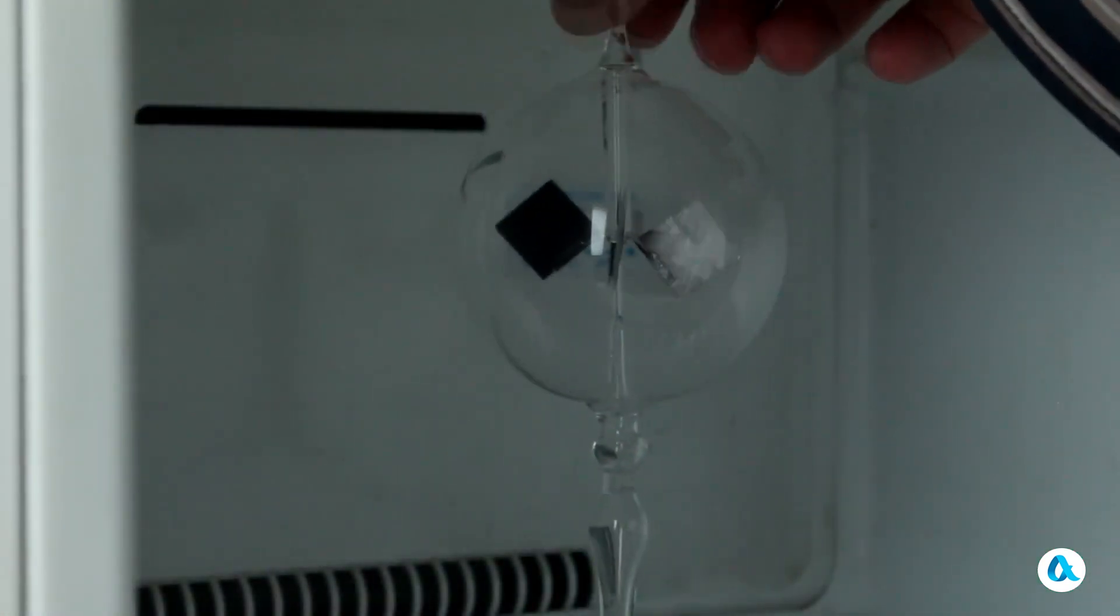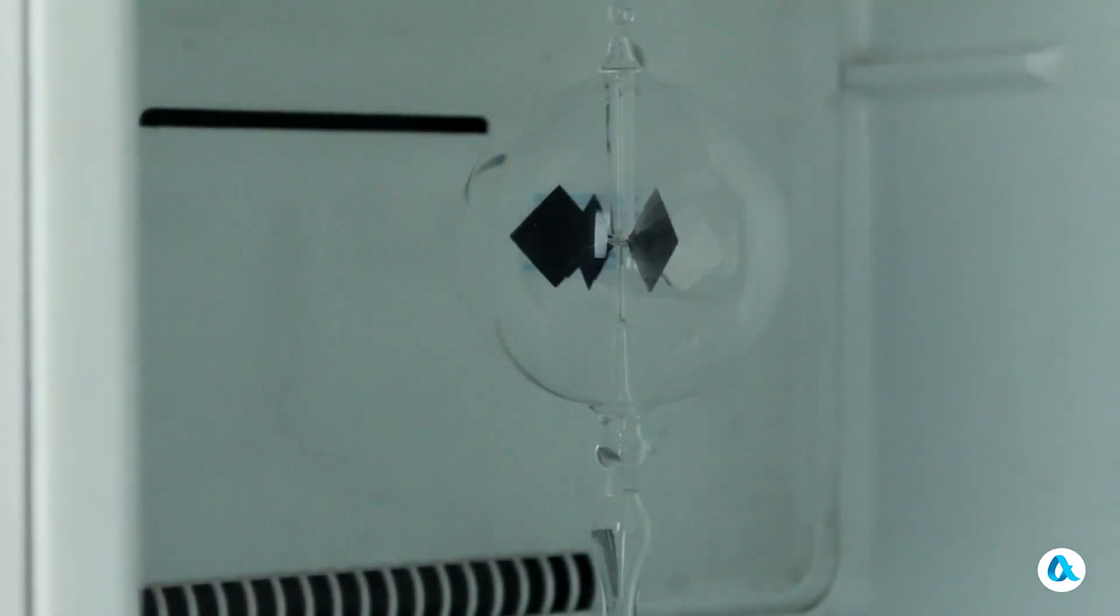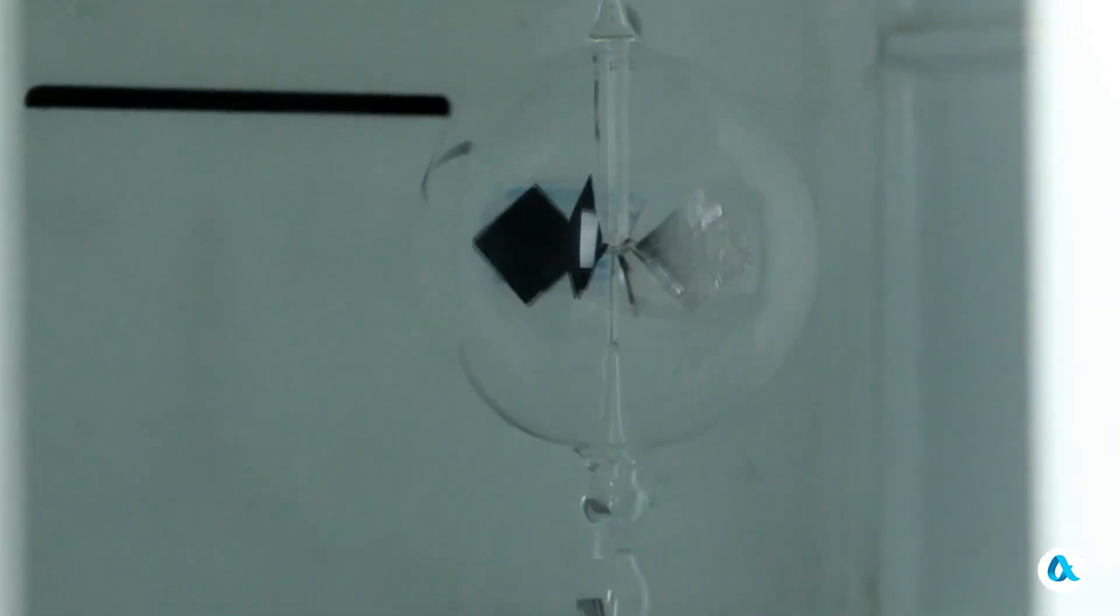And now let's carefully conduct the final experiment and place the radiometer in the freezer compartment of the refrigerator. And now the vein starts to rotate, but not with the mirrored sides forward as in all previous experiments, but with the blackened sides forward.